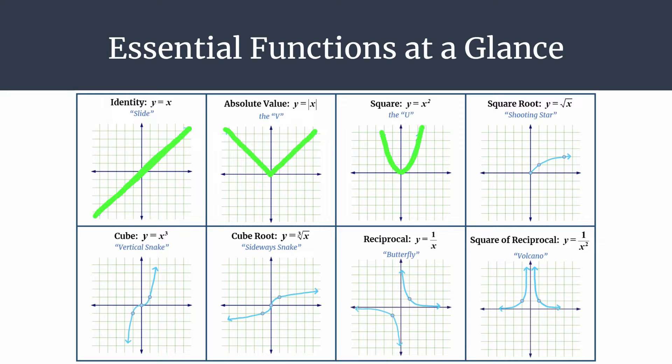The square root, y equals the square root of x, looks like a shooting star. You start from 0, 0 because you can't take the square root of any negative numbers. So your first input is here at 0, 0 and then you just apply the square root and so it kind of shoots off to the right there, thus shooting star.